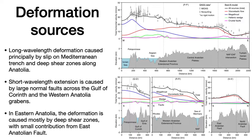Slip on the Hellenic Trench, shown in blue in these profiles, produces a long-wavelength displacement across the Peloponnese, but localized deformation across the Gulf of Corinth requires active crustal extension associated with large normal faults along the southern Gulf margin. A more distributed pattern of extension is found in western Anatolia, where several grabens accommodate extension on the eastern side of the Aegean. In contrast, in eastern Anatolia the surface deformation is almost entirely due to deep shear zones with a small contribution from faults in the brittle crust.